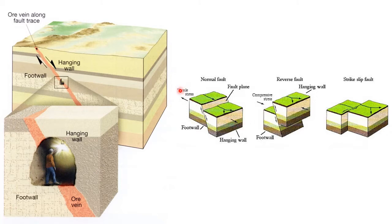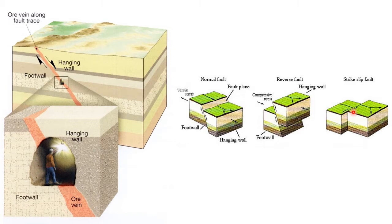In normal faults, sigma-1 is vertical. In reverse faults, the hanging wall goes up relative to the foot wall. The third type of fault is a strike-slip fault, where the fault plane is vertical and movement takes place in the strike direction of the fault plane — blocks move parallel to strike. This may be left-lateral movement or right-lateral movement.